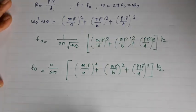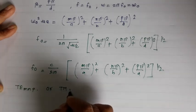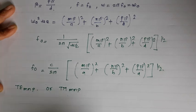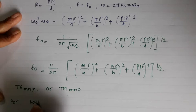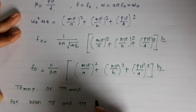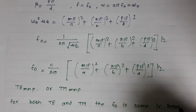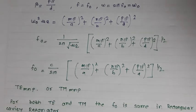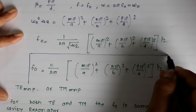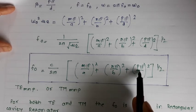The general modes of propagation in the cavity resonator are TE_mnp or TM_mnp. For both TE and TM modes, the resonant frequency f0 is the same in the rectangular cavity resonator. So we have calculated the resonant frequency: f0 = (c/2π)√[(mπ/a)² + (nπ/b)² + (pπ/d)²]. This is all about the rectangular cavity resonator.